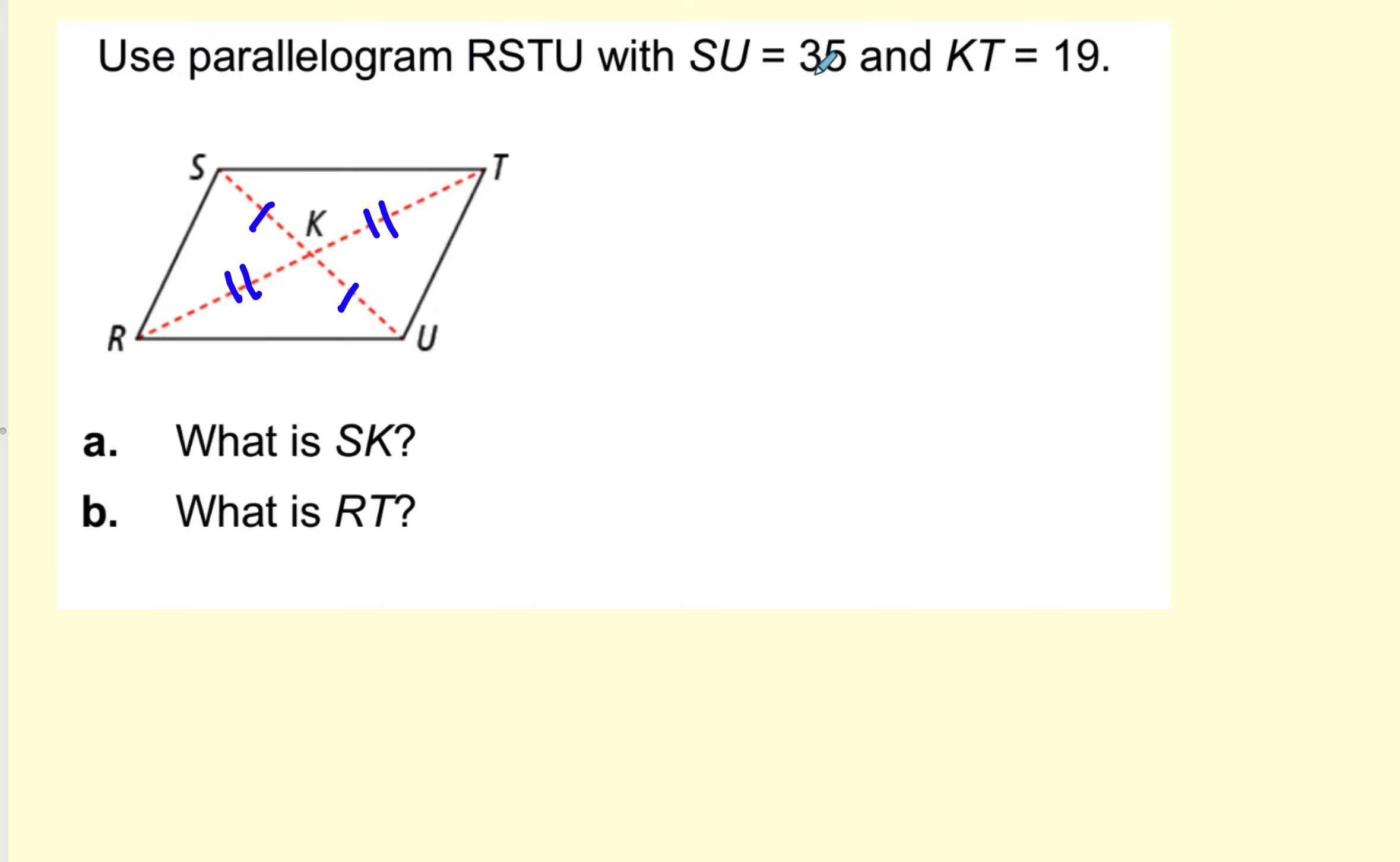SU is 35. So this whole diagonal is 35. And if I only want SK, then I'm going to have to take one half of 35 because it's being bisected. So this will be 17.5.